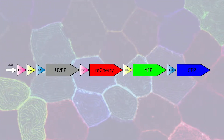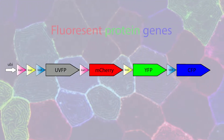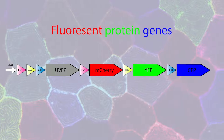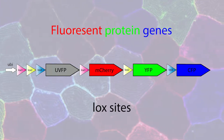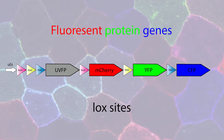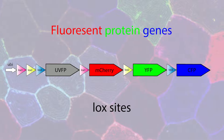This is a piece of DNA that has four fluorescent protein genes, six lox sites, and an ubiquitin promoter in front.